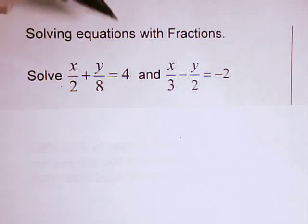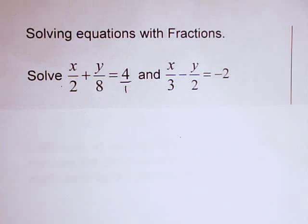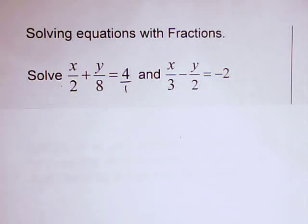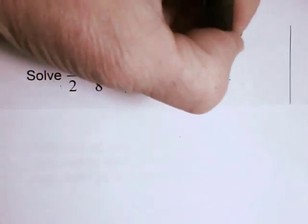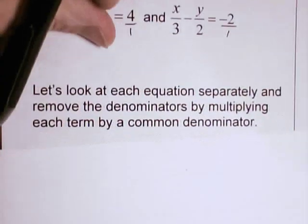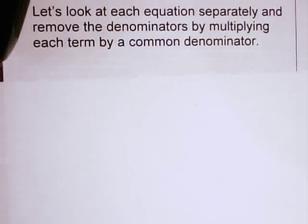If I look at this first equation, if you don't see a number underneath a whole number, that means it's a 1. The common denominator would be 8. Here, the common denominator is going to be 6. So we'll remove the denominators by multiplying each term by a common denominator.